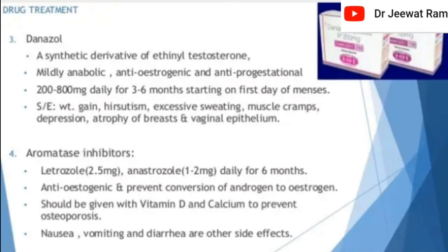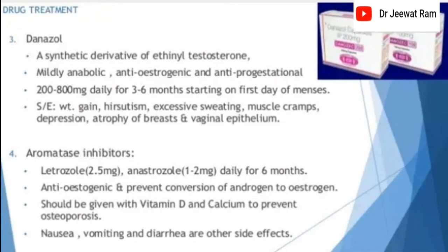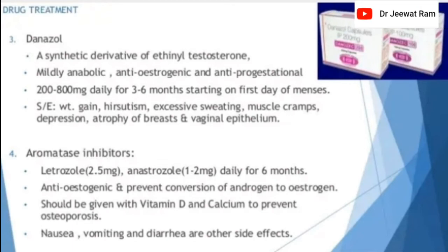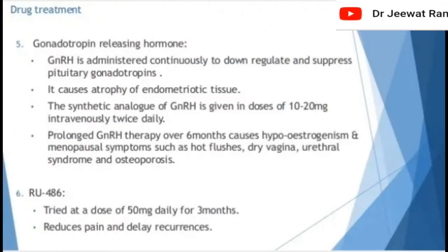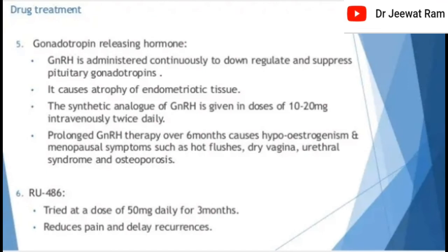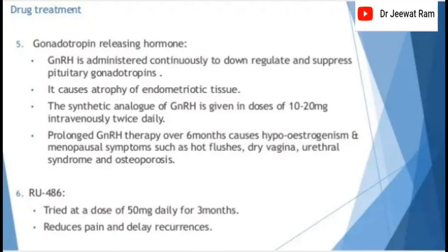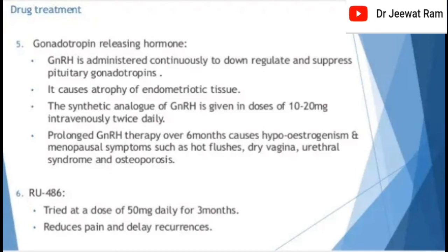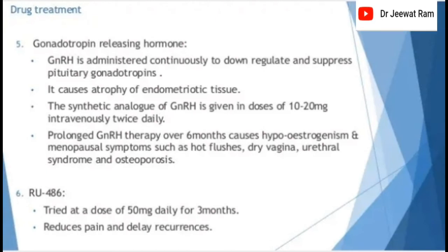Aromatase inhibitors: letrozole 2.5 mg or anastrozole 1–2 mg daily for 6 months. They are anti-oestrogenic and prevent conversion of androgens to estrogen; should be given with vitamin D and calcium to prevent osteoporosis. Nausea, vomiting, and diarrhea are other side effects. Gonadotropin-releasing hormone (GnRH) agonists administered continuously down-regulate and suppress pituitary gonadotropins, causing atrophy of endometriotic tissue. Prolonged GnRH therapy over 6 months causes hypoestrogenism and menopausal symptoms such as hot flushes, dry vagina, urogenital syndrome, and osteoporosis.